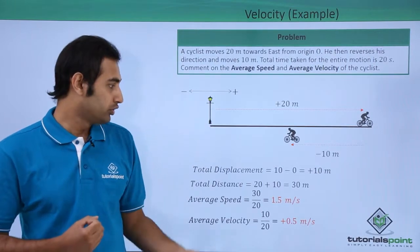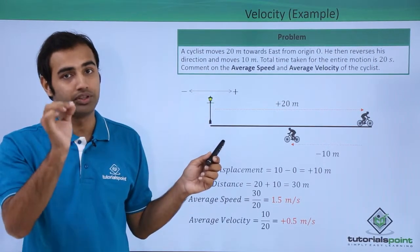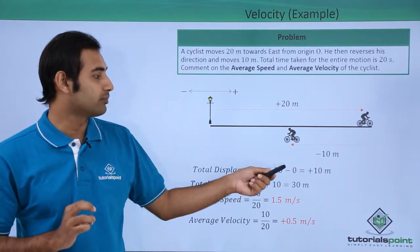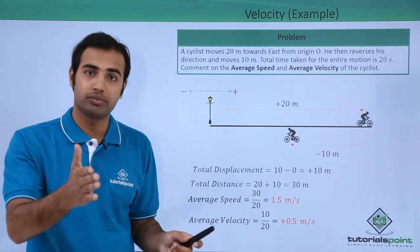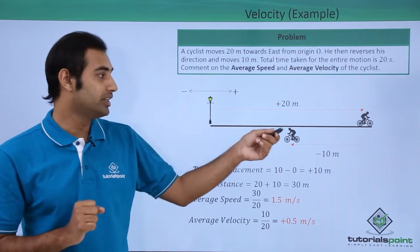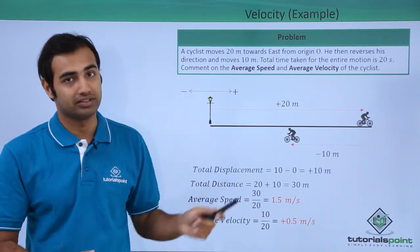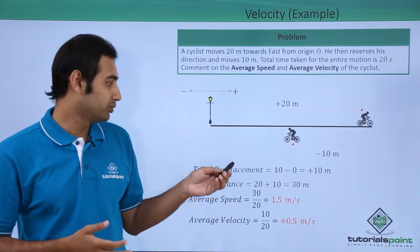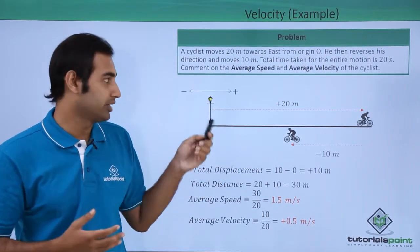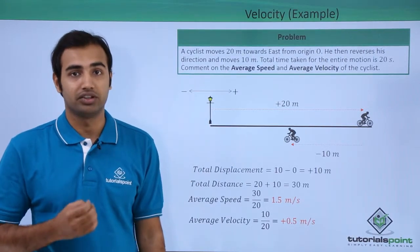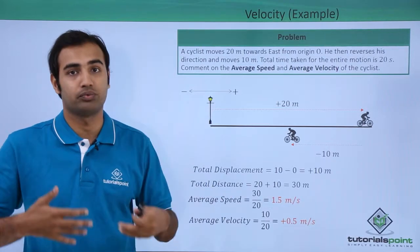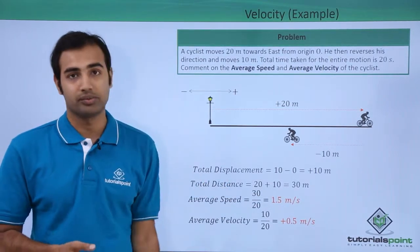We have to comment on average speed first of all. I will calculate total distance and total displacement, because the average speed formula needs total distance and average velocity needs total displacement. Total displacement is 10 minus 0. Displacement is defined as final position minus initial position. The particle started at 0, so position A is at 0 and position B is at plus 10. So displacement is PB minus PA vector, which is 10 minus 0, which is plus 10 meters. Total distance travelled is 20 plus 10, because distance is simply the path length — it does not care about direction. So total distance is 30 meters.